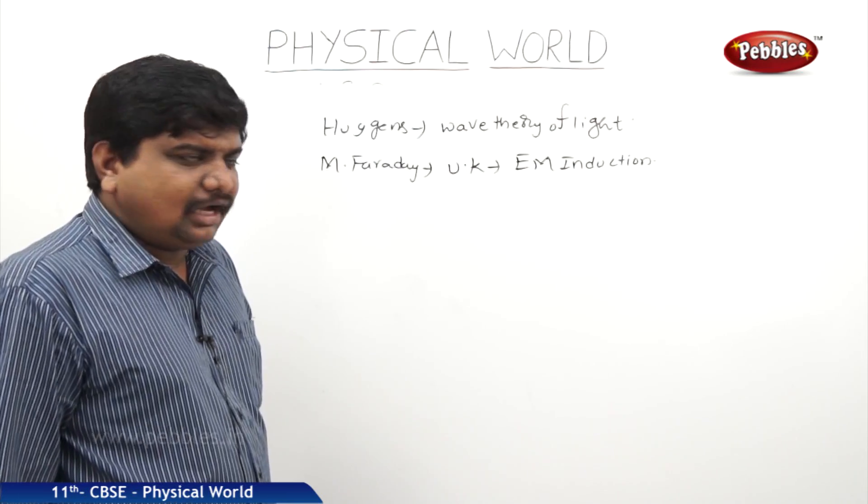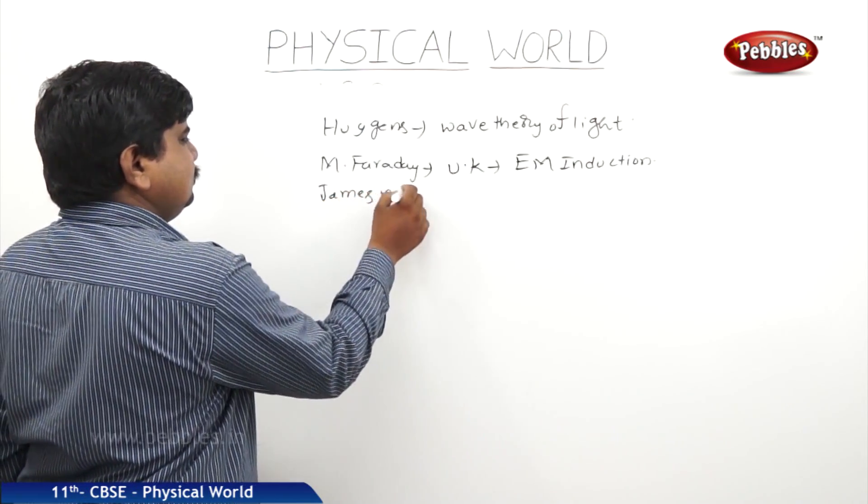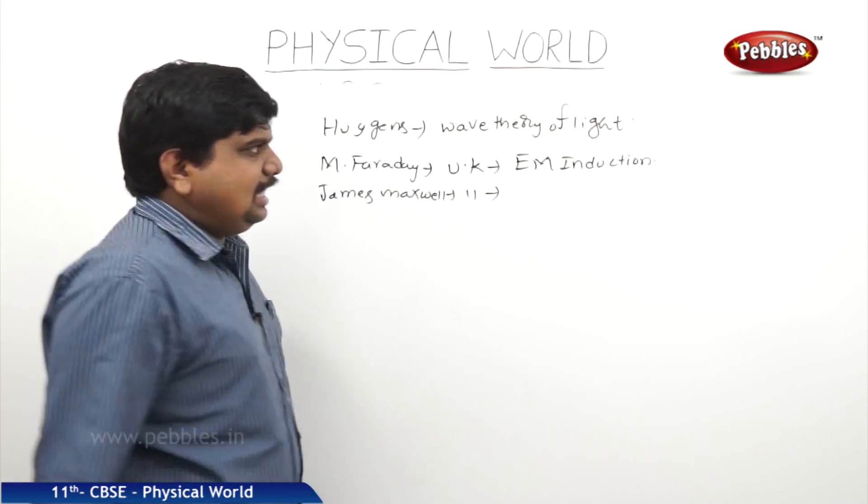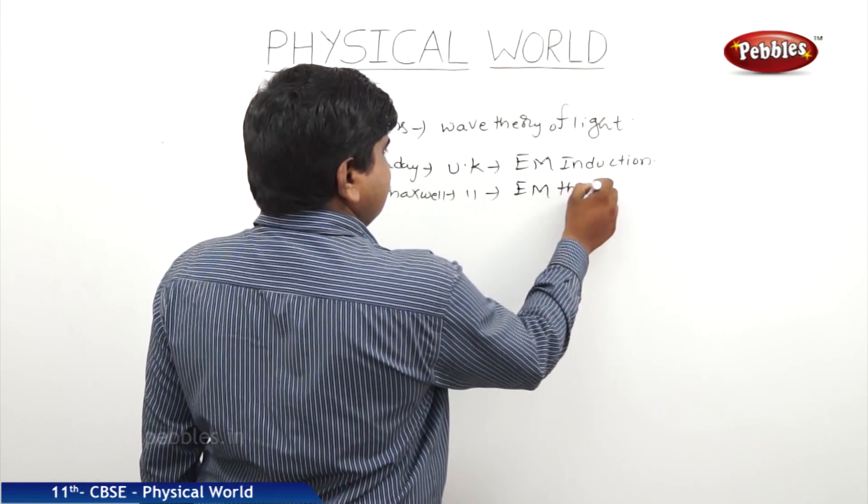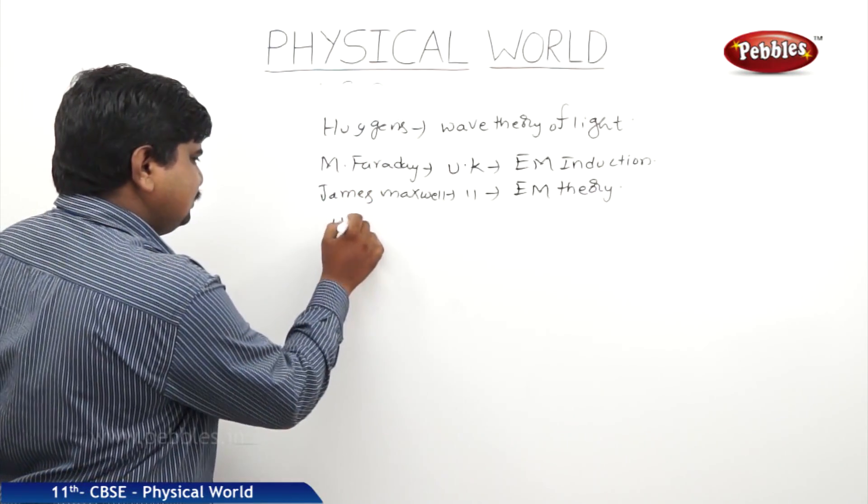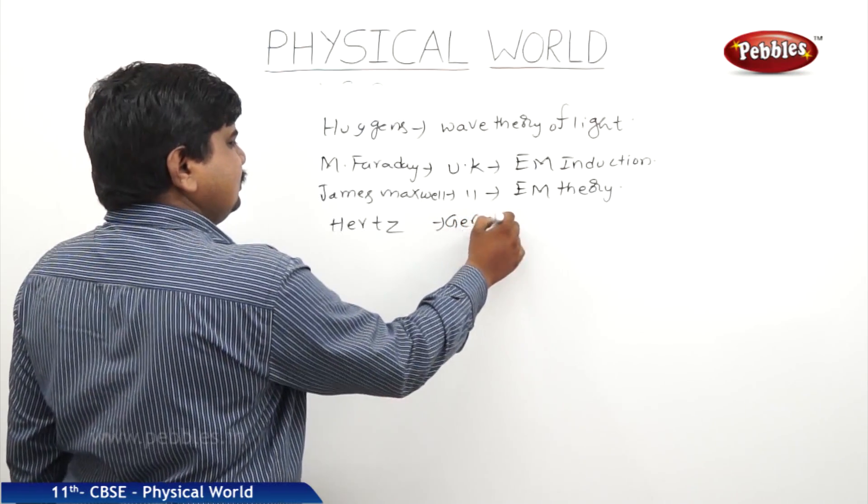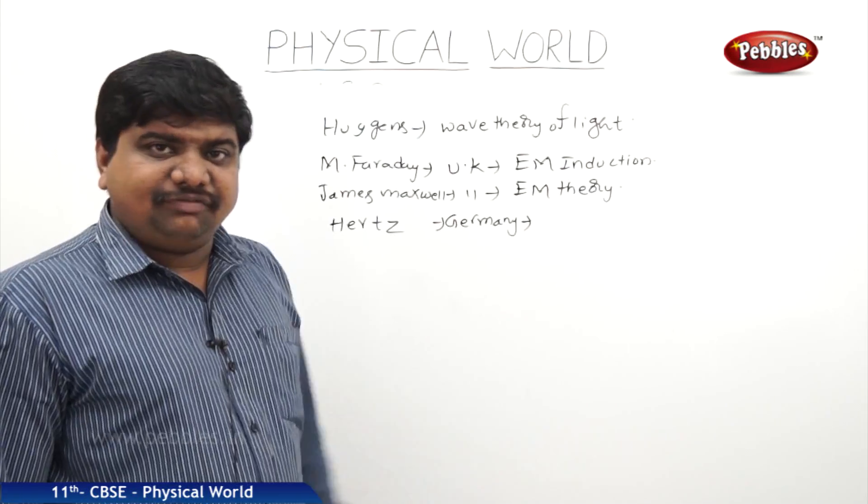The next great scientist in the order is James Maxwell, he is also from UK. He has discovered the electromagnetic theory. Next one is Hertz from Germany who has discovered the generation of electromagnetic waves.